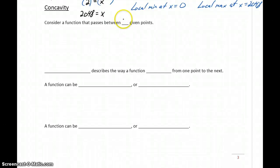Let's consider a function that's passing between two given points. What we know is that there's some point A, some point B, and our function is somehow passing between the two of those. So the question becomes, how does our curve get from point A to point B?